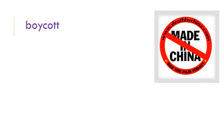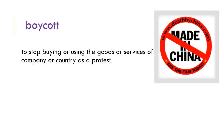Beginning with the first term for this unit, we have the word boycott. Boycott basically means that you stop buying something or using something — a good or a service of a company or a country — as a protest. The picture here shows 'made in China' with a big red bar through it, because some people in our country boycott things made in China, or boycott things from a certain company to make a statement that they don't like something about that company.